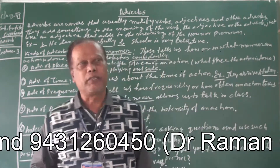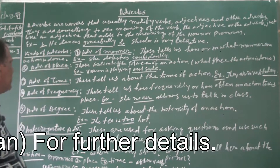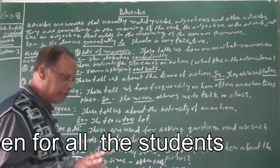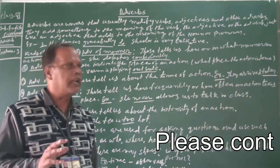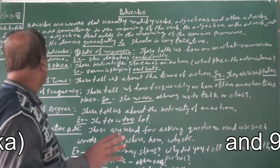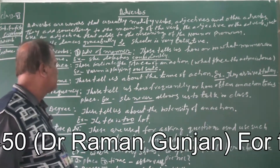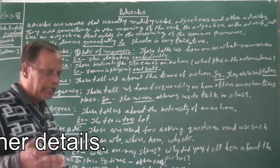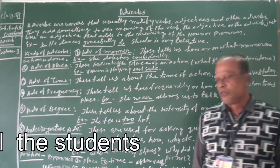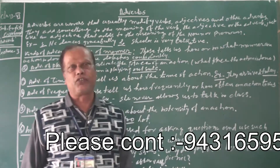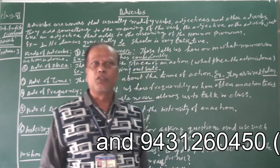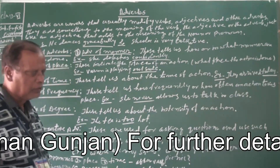To understand this, consider the example: 'He dances gracefully.' The word 'gracefully' is an adverb because it adds to the meaning of the verb 'dance' — it tells us how he dances. Next example: 'Sila is very talkative.' Here the word 'very' is an adverb — it tells us how talkative Sila is.